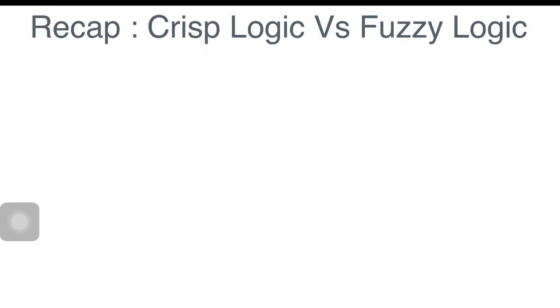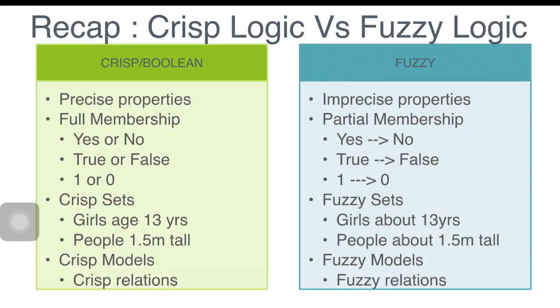Let us first recap on differences between crisp logic and fuzzy logic. Unlike Boolean logic, fuzzy logic is multi-valued. It deals with degree of membership and degree of truth.